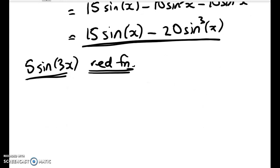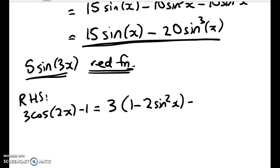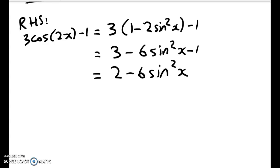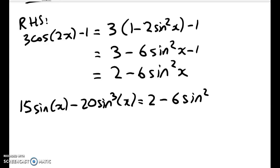So now we're going to work with the right-hand side, and then we're going to equate them. So 3 times cos of 2x minus 1. So this is less work here. So it's 3 times 1 minus 2 sine squared x minus 1, which gives me 3 minus 6 sine squared x minus 1, or 2 minus 6 sine squared x. So what am I trying to do? Well, I want to find where the two things are equal. So I've got 15 sine x minus 20 sine cubed x is equal to 2 minus 6 sine squared x. I'm going to set that equal to 0 and get a cubic.